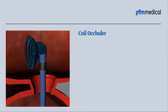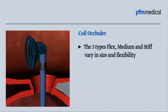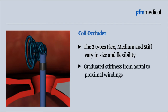Coil occluder. The three types — flex, medium and stiff — vary in size and flexibility. Graduated stiffness from aortal to proximal windings fits all PDA types.